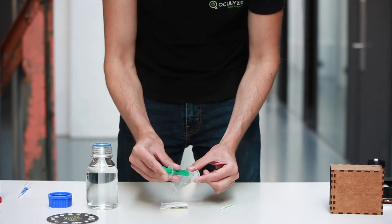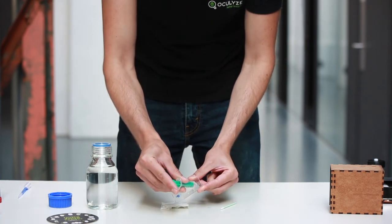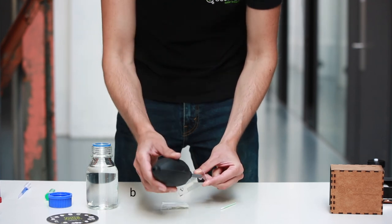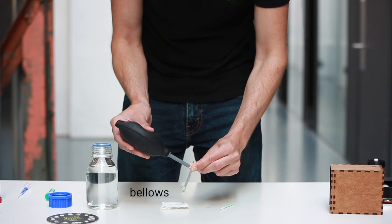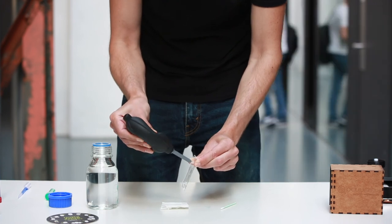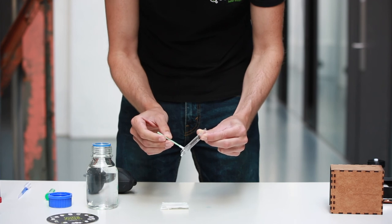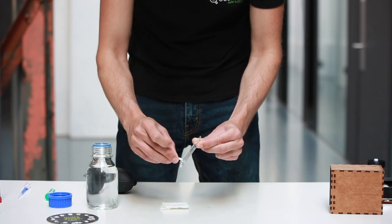Step 2. Rinse the chamber with distilled water. Step 3. Use the bellow to dry the chamber. Pump the bellow to blow air through the chamber. Use a small piece of tissue at the end to collect the water.